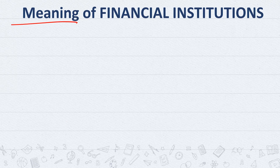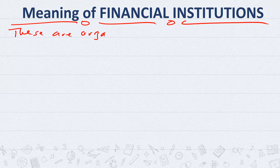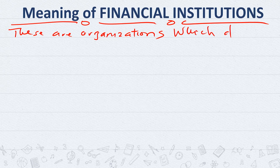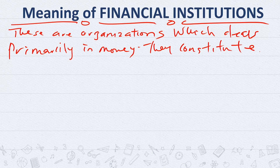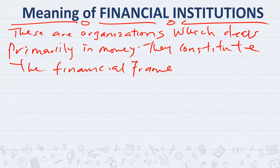Let's start with the meaning of financial institutions. Financial institutions are organizations which deal primarily in money. They constitute the financial framework of an economy.